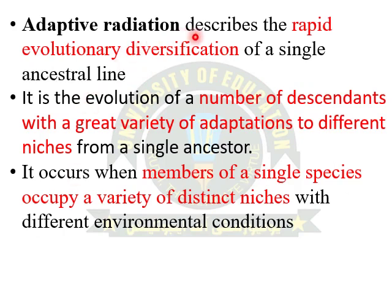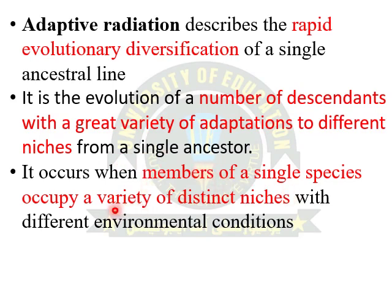Now we will discuss the next concept called adaptive radiation. Adaptive radiation is basically a rapid evolutionary diversification of a single ancestral line. It is an evolution of a number of descendants with a great variety of adaptations to different niches of a local environment from a single ancestor. Adaptive radiation may occur when members of a single species occupy a variety of distinct niches with different ecological conditions.